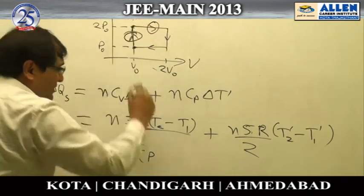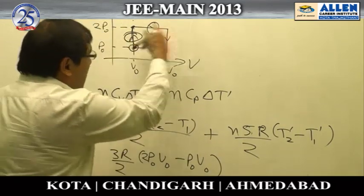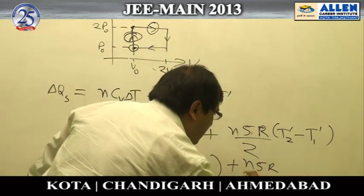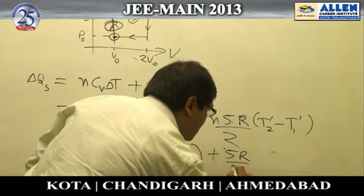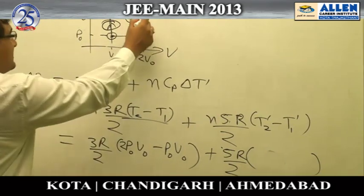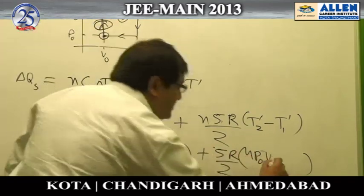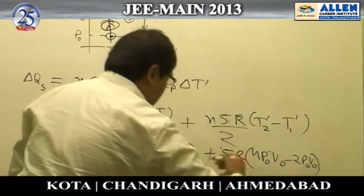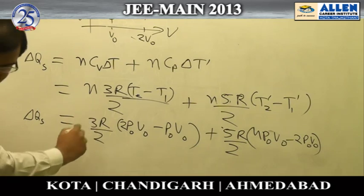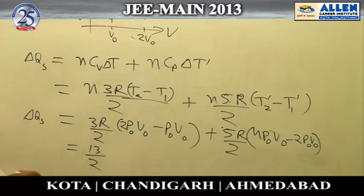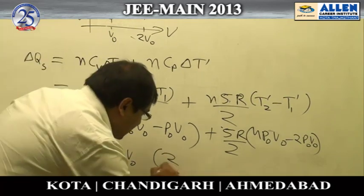Substituting values: for the isochoric process, the final state is 2P₀V₀ and the initial is P₀V₀. For the isobaric process, the final state is 4P₀V₀ and the initial is 2P₀V₀. Solving for total heat supplied gives the answer 13/2 · P₀V₀, making option 2 the correct answer.